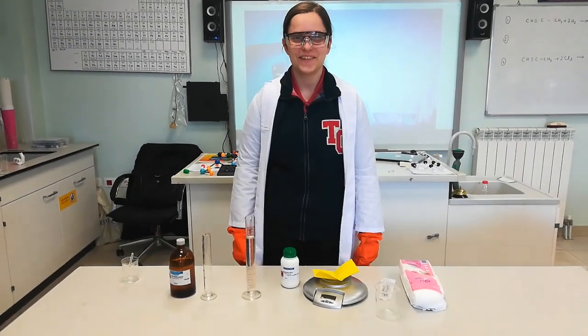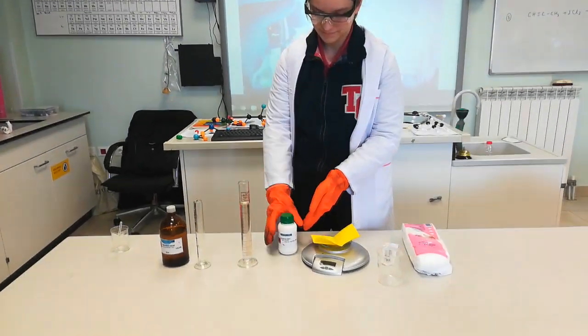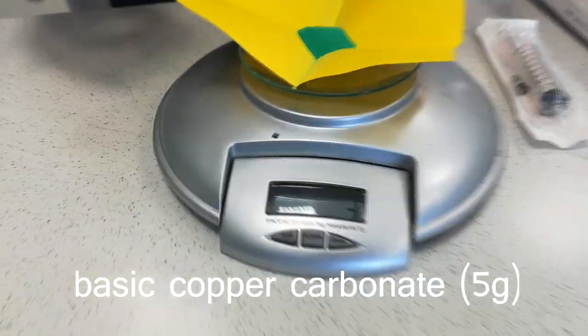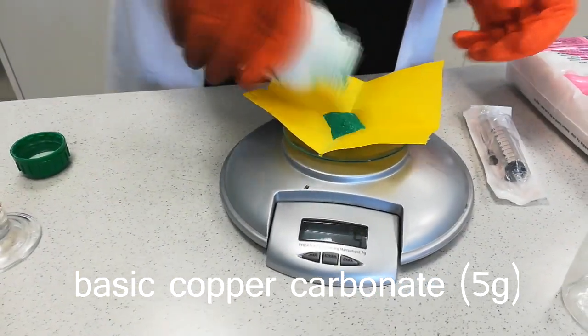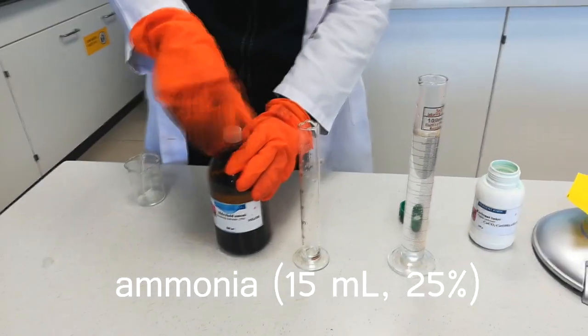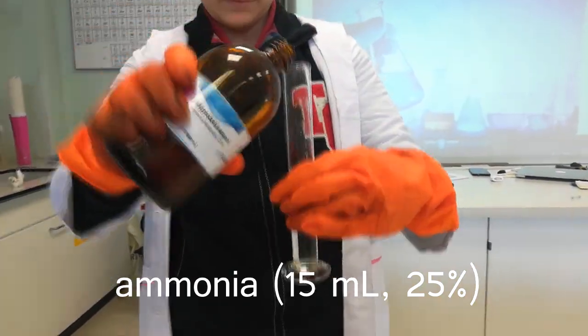The procedure is as follows. We start the experiment by preparing the solution of cellulose. To do this, we weigh 5 g of basic copper carbonate and add 15 ml of a 25% ammonia solution.